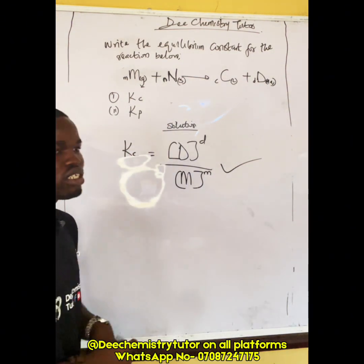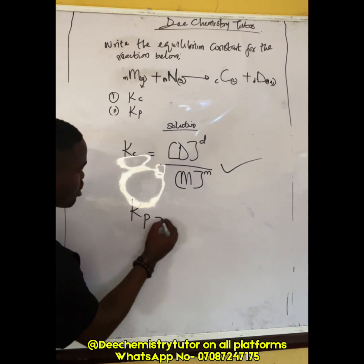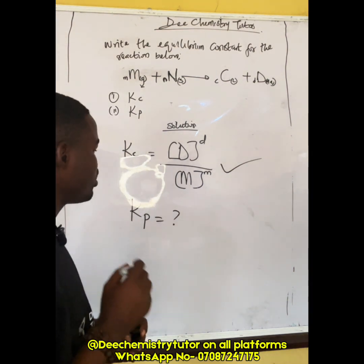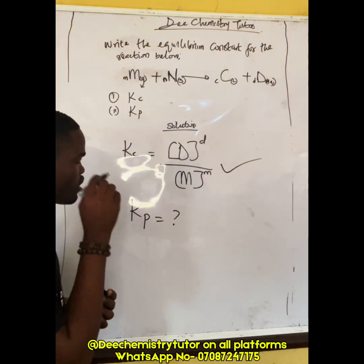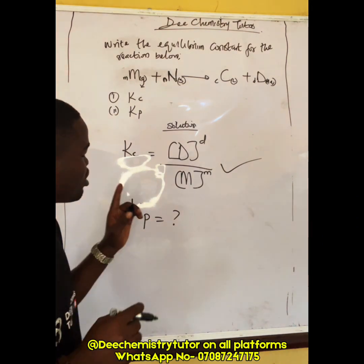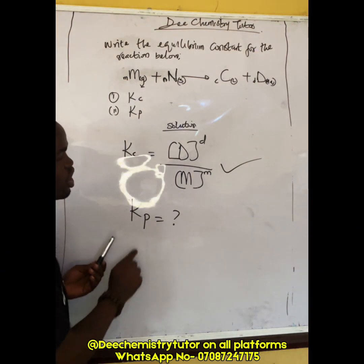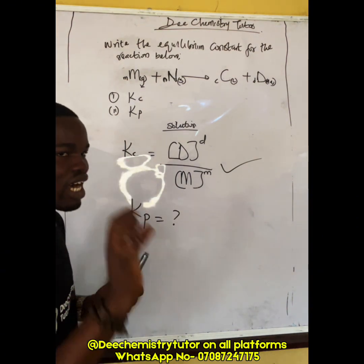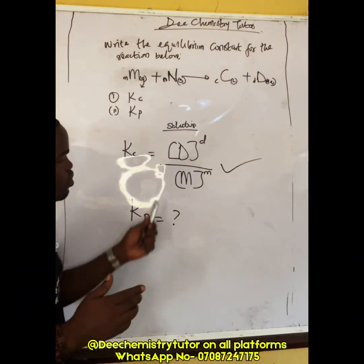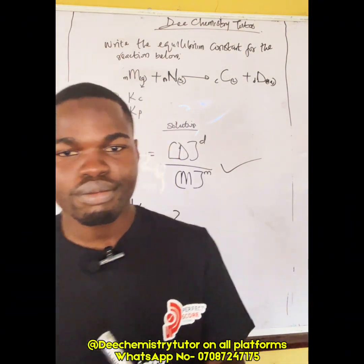So the Kc for this reaction is the concentration of D raised to power d, over the concentration of M raised to power m. Now, what is Kp for this reaction? Remember, for Kp we only consider gases. Drop your answer in the comment section!